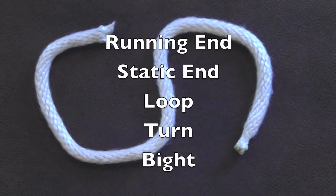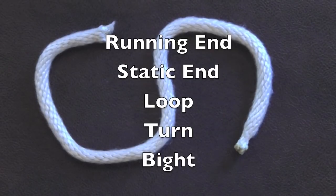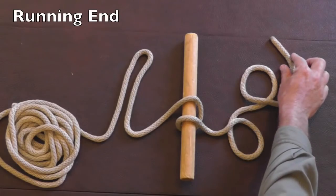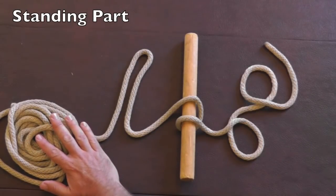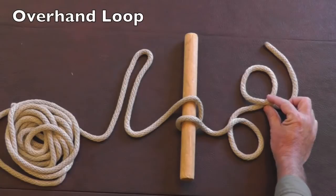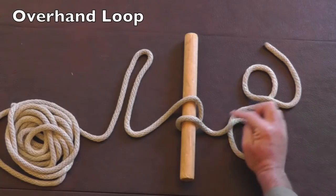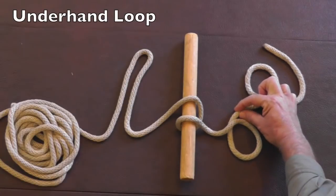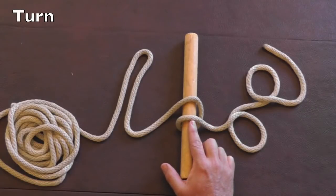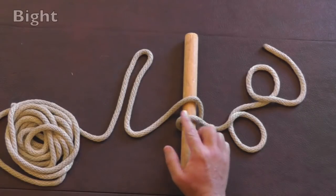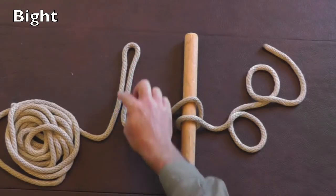One challenge in learning new knots is terminology. A rope doesn't seem to have many parts, and being able to describe how to tie a knot can be challenging in words. Here are some standard terms that you may find useful: the running end is the free end you use to tie a knot; the standing part is the static end of the rope opposite the running end; an overhand loop is a loop which goes over the standing part; an underhand loop is a loop which goes under the standing part; a turn is a loop around an object; and a bight is a bend in a rope which doesn't go across itself.